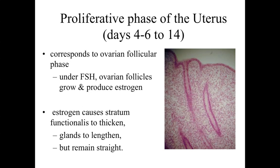During the proliferative phase of the uterus, roughly days 4 to 14, we're going to be corresponding to the ovarian follicular phase. In response to FSH, the ovarian follicles are growing and they're going to produce estrogen. That estrogen circulates to the uterus and causes the cells within the stratum functionalis to regenerate — so it's going to cause the stratum functionalis to thicken. Glands are going to be present, they're going to lengthen, and they're going to remain relatively straight.